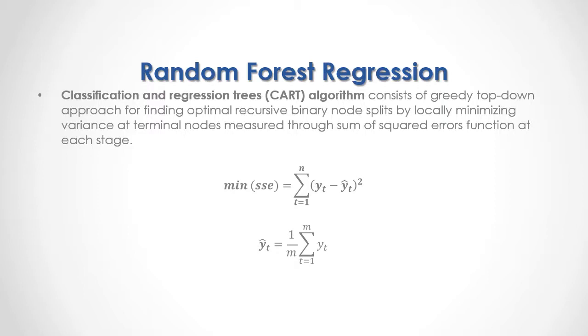The terminal node output target feature mean is equal to 1 divided by m, where m is the number of observations in the terminal node, multiplied by the sum of the output target feature data.